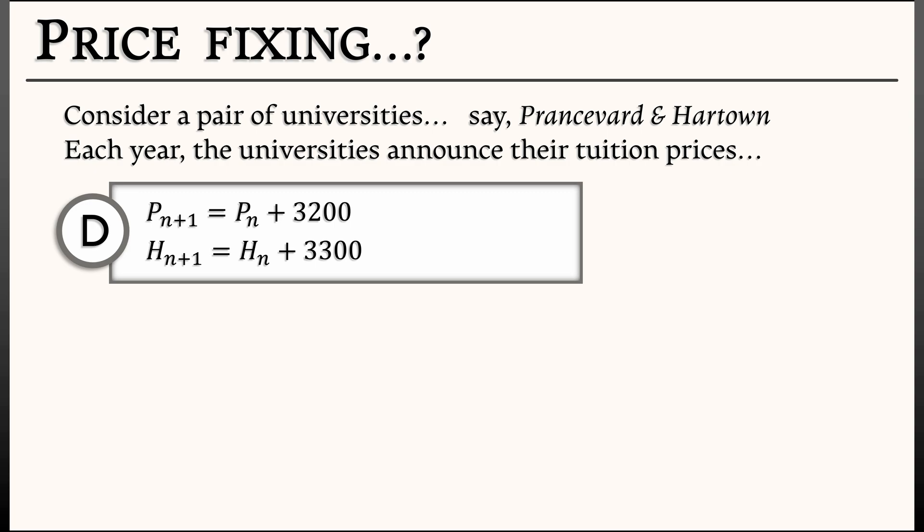But let's assume that there's some small mutual influence on the prices, something that depends on the price difference. Let's say that every year, Pransvard looks at Hartown's prices and takes 3% of the difference and adds that to its tuition increase. Hartown does the same thing with Pransvard, but is less severely influenced. It's just a 1% difference.